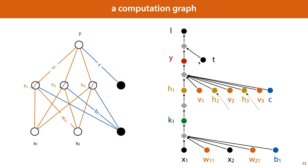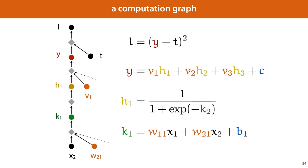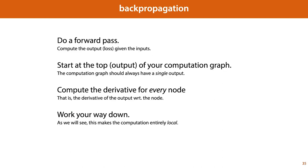Note also that we've included here the computation of the loss. This is because when we compute gradients, we're always interested in the derivative of the loss with respect to the parameters. Therefore, the computation of the loss should be part of the computation graph. We can now write down the computations performed by each of these diamond nodes. The computation graph, together with the definitions of these computations, defines everything we need to know about the neural network.